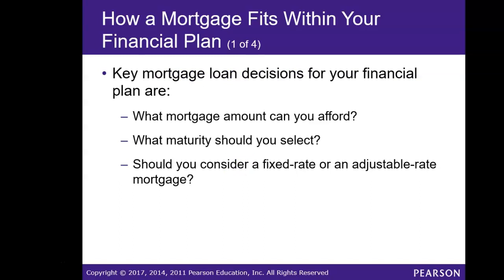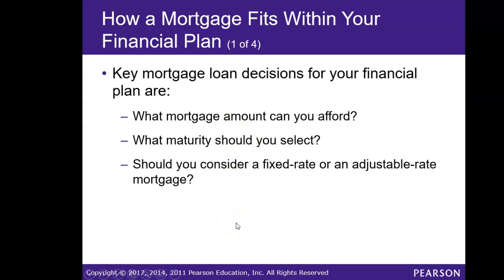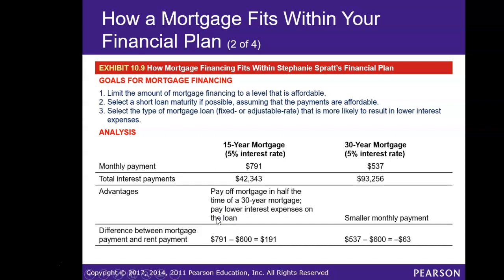Here are key takeaways regarding mortgage loans pertaining to your financial plan. Question one: what mortgage amount can you afford? Question two: what maturity should you select — a 15-year or 30-year mortgage? Should you consider a fixed rate or an adjustable rate mortgage? Here we have an example: with a 15-year mortgage your monthly payment would be $791 compared to a 30-year mortgage at $537, based on borrowing $100,000 at a 5% interest rate.